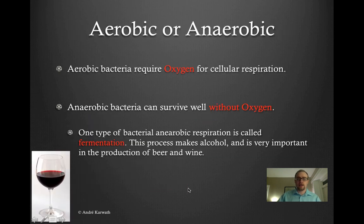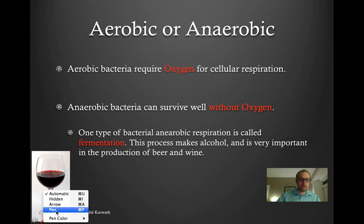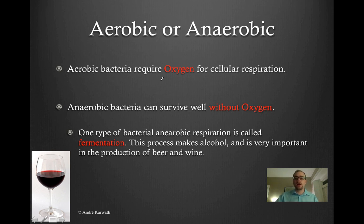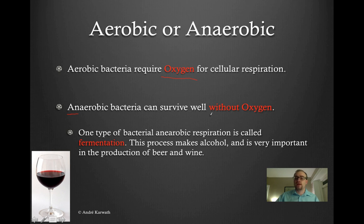The next thing I want to talk about in terms of nutrients with bacteria is that some bacteria can be aerobic, whereas others are anaerobic. What does aerobic mean? Well, if you think of aerobic exercise, it's generally exercise where you're breathing. Aerobic bacteria require oxygen for cellular respiration, which is a process of taking sugars and converting them into energy stores for the cell. They require oxygen to produce energy in their cells. Anaerobic bacteria — in biology, the prefix "an" in front of something usually means it doesn't need that material — so anaerobic means bacteria that do not need oxygen. These bacteria can survive well without oxygen.